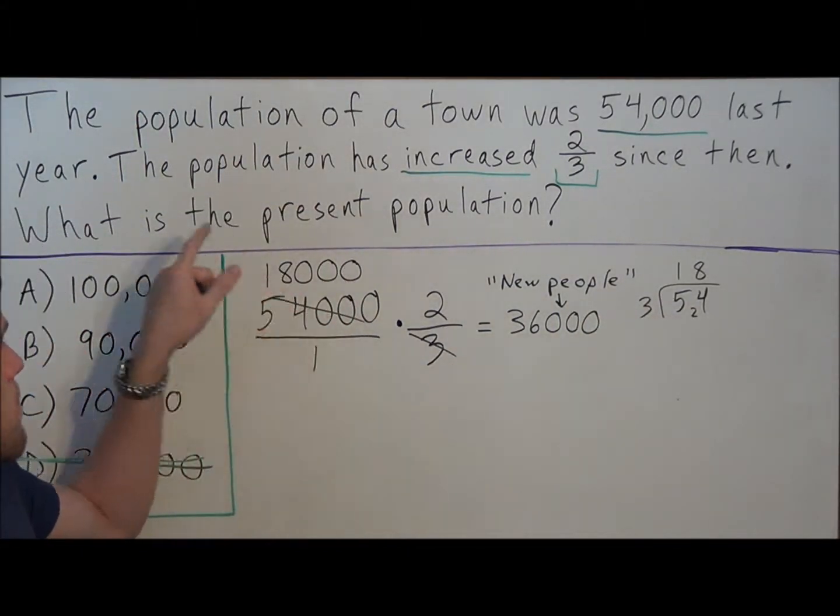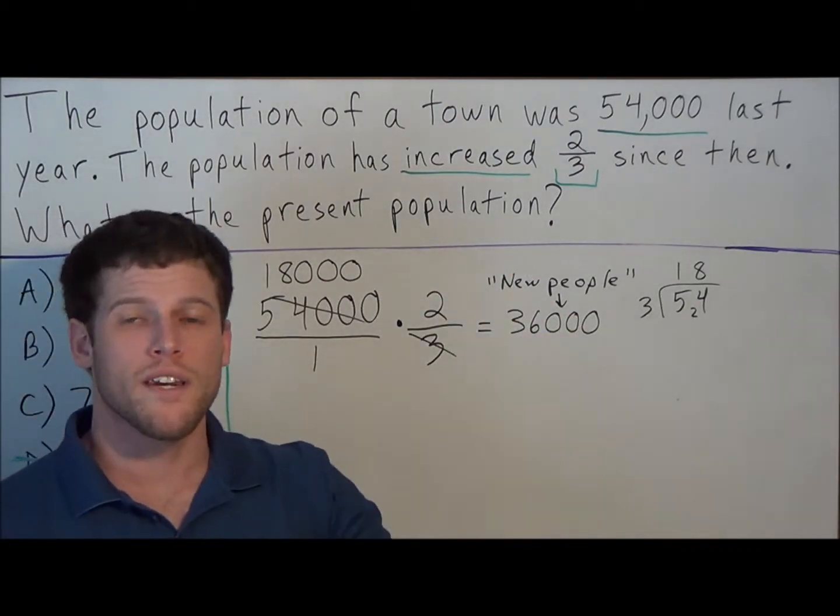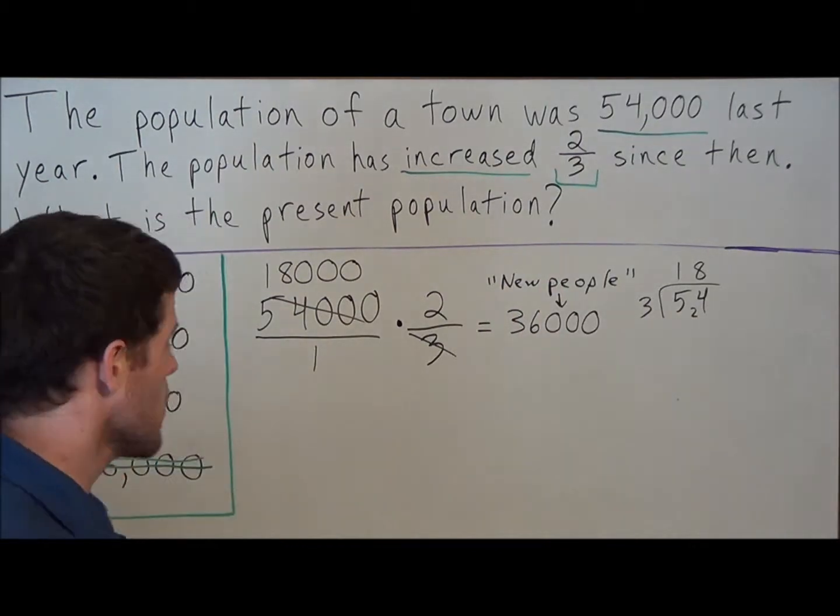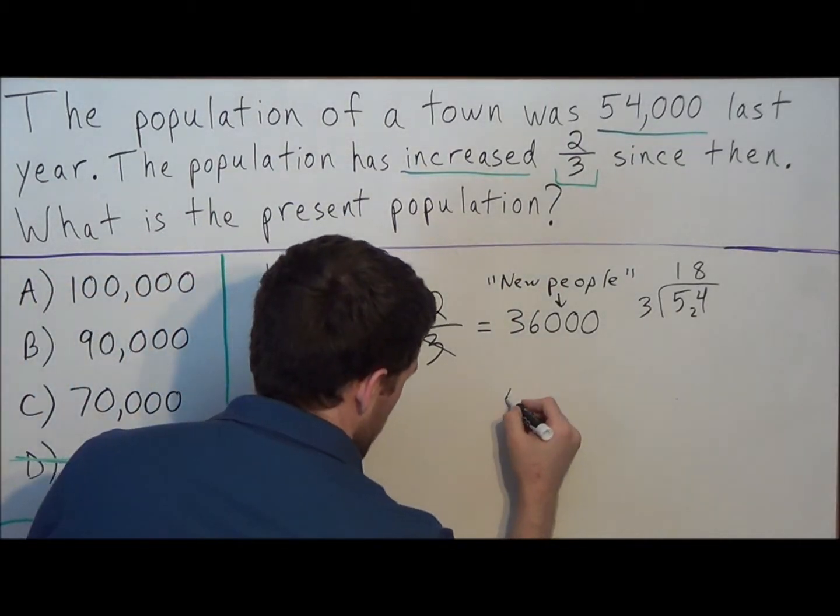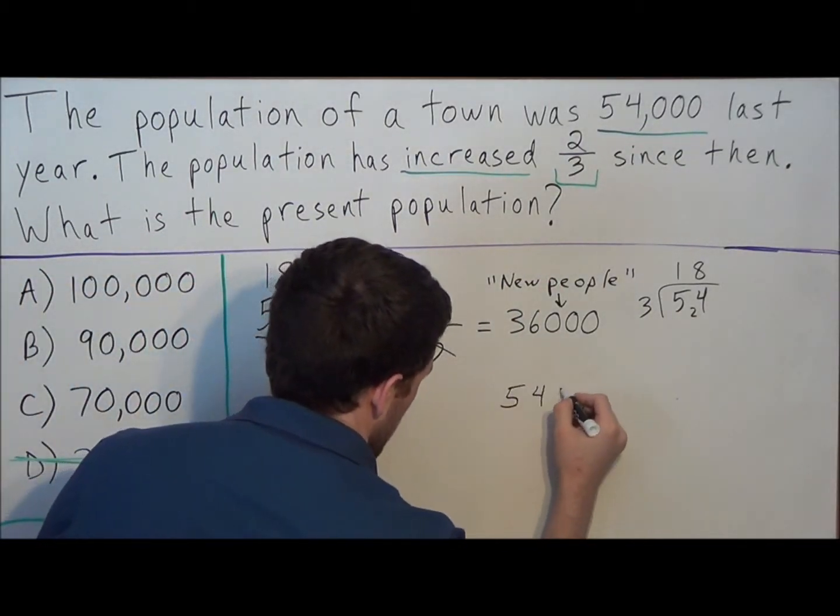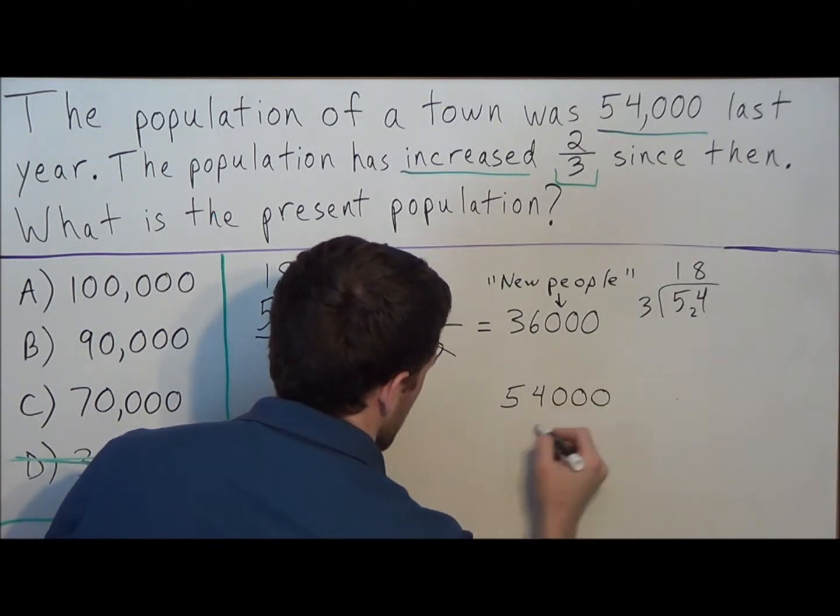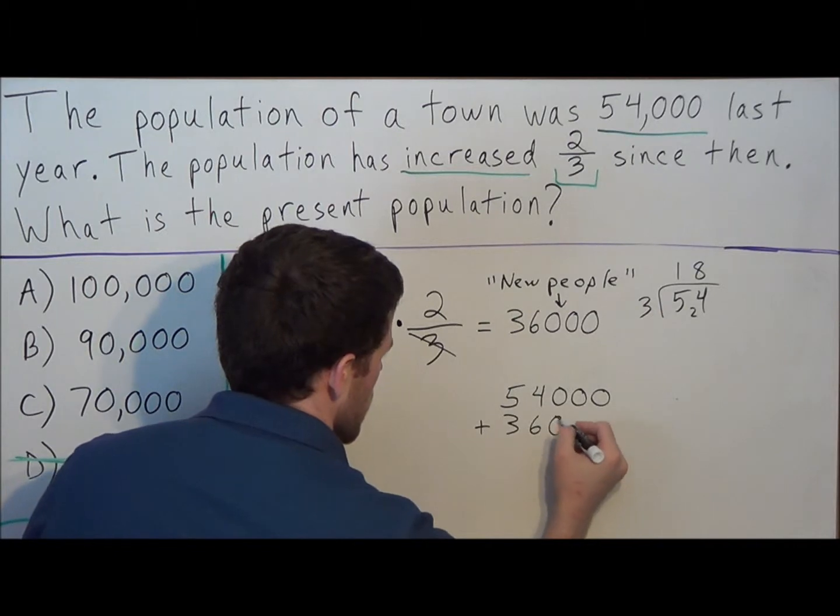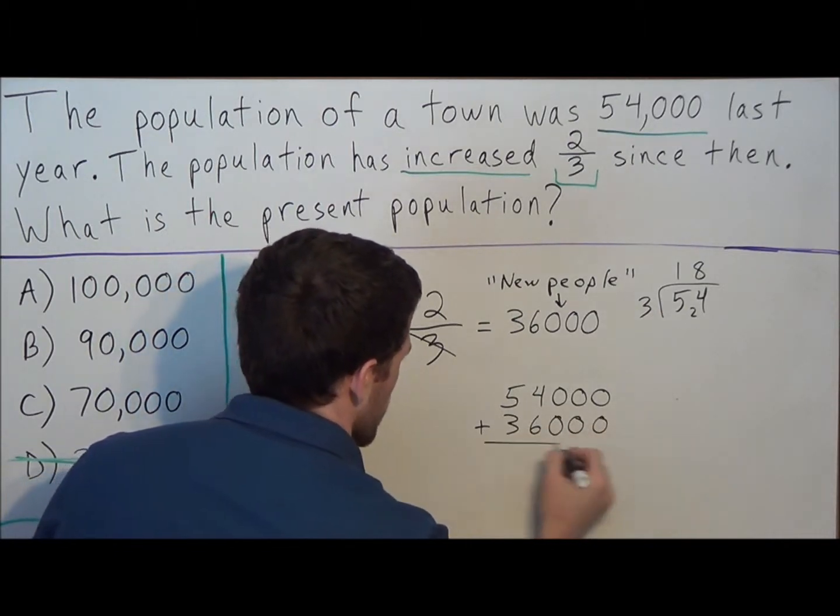To find out the present population, we need to add the new people plus the 54,000 original people. So now we can set up, we have 54,000 plus the new people, the 36,000 new people in this town.